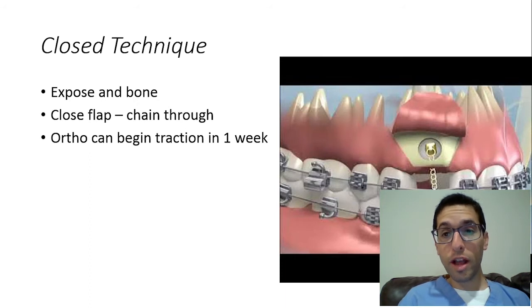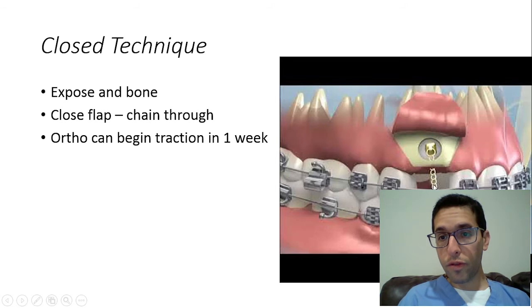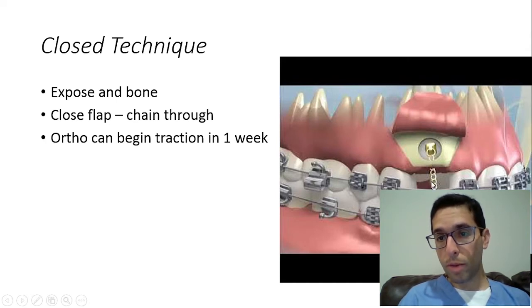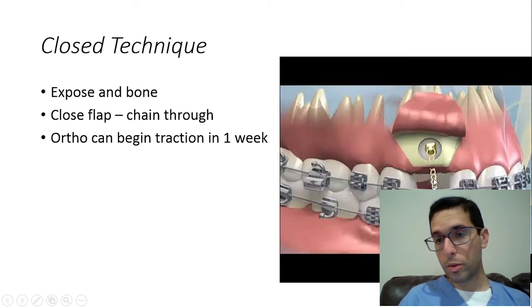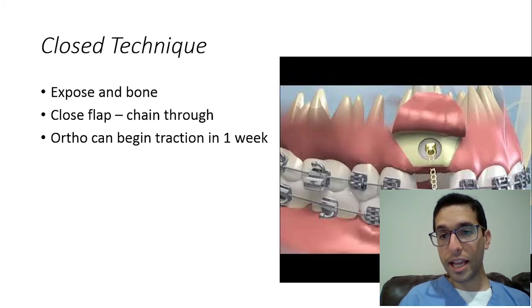If the tooth is too high in the alveolus, you should consider the closed technique. With the closed technique, you expose and bond it, then close the flap. The chain will come out through the flap and attach to your wire, pulling on the chain through the soft tissue. When the tooth is ready, it will just erupt through the tissue and come into the right place with no periodontal defect. You flap it and then close the flap, leaving the chain hanging through.